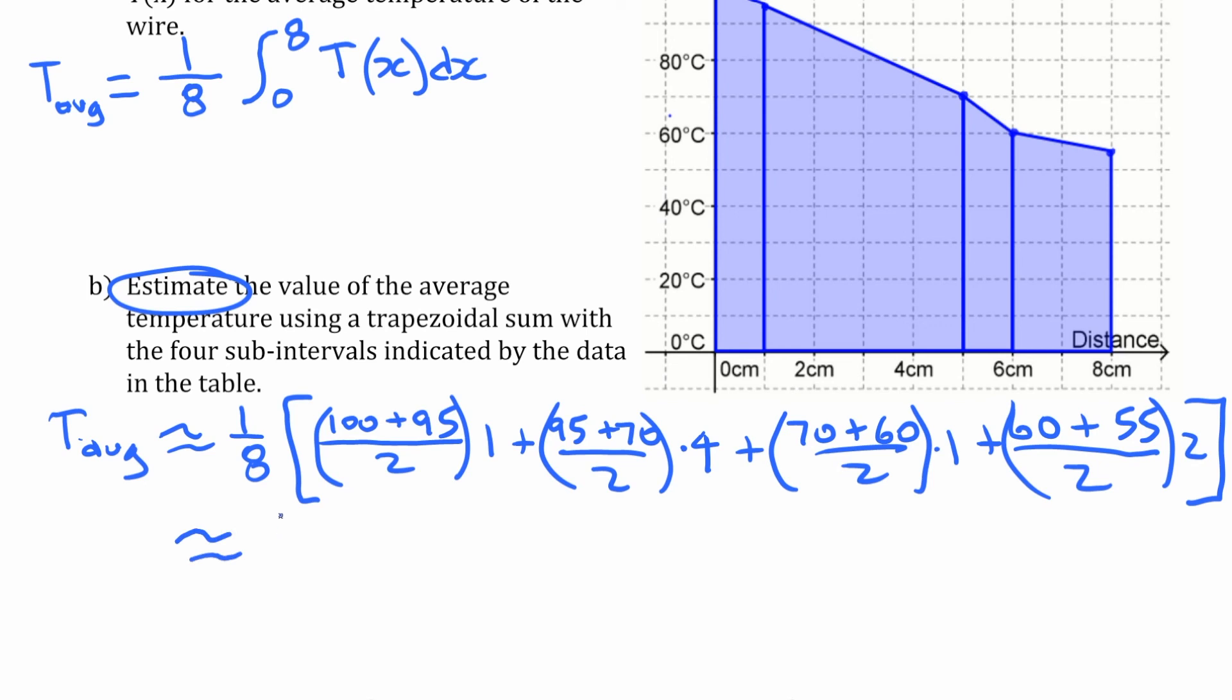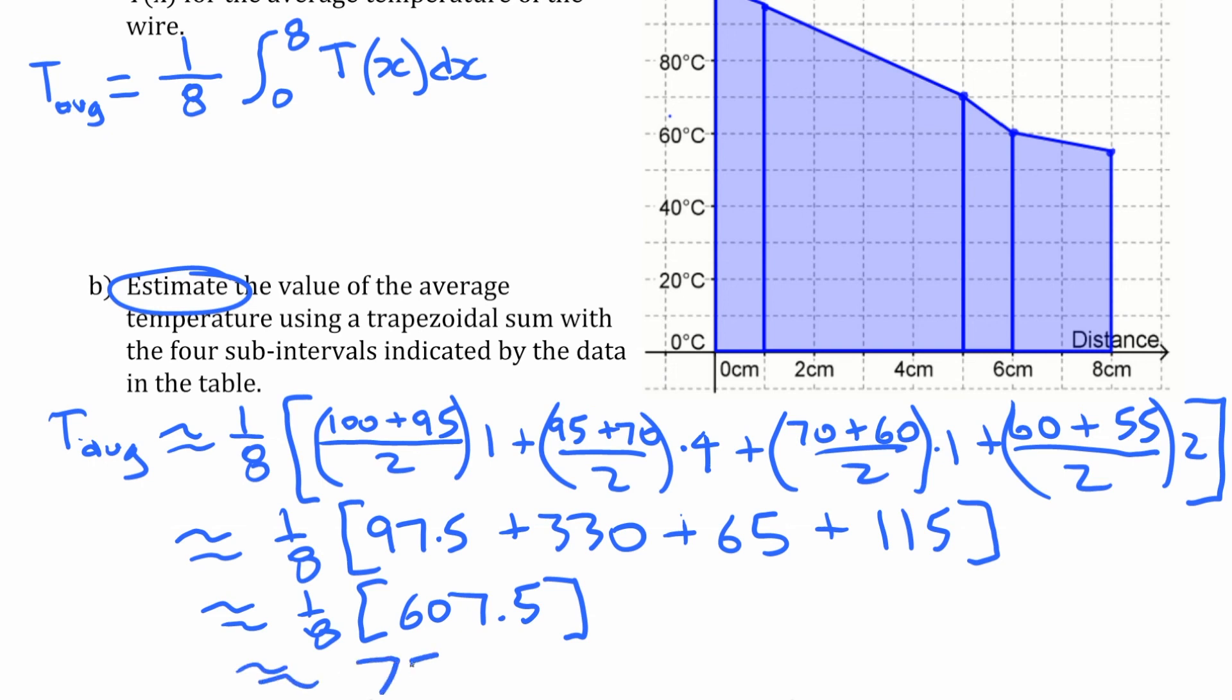So if we work that out, that's going to give us, we'll put one intermediate step in here. If you work this out, you get, this is 97.5. This is 330. This is 65. And this is 115. If you add that all together, it is 607.5. That's the area, that's the approximate area of that, according to those trapezoids. And if we divide it by eight, we have that the average is 75.9 roughly. That's the average temperature.